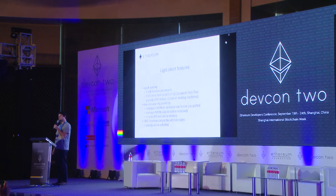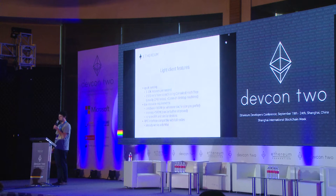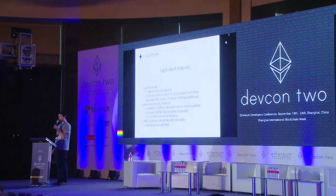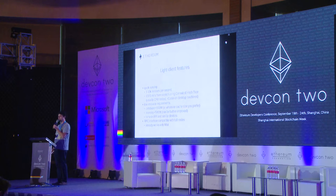To improve syncing even further, it is possible to start syncing from a trusted checkpoint, which is represented by the root hash of a Merkle tree containing all previous block hashes — it's called a canonical hash tree. This structure also allows access to old headers that haven't been downloaded during initial sync, which could be useful for searching for old logs or accessing old transactions.